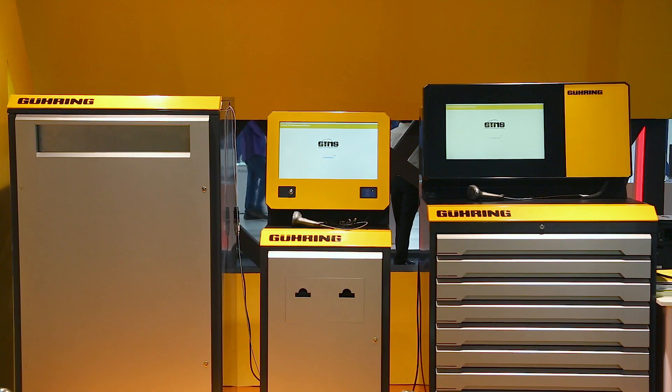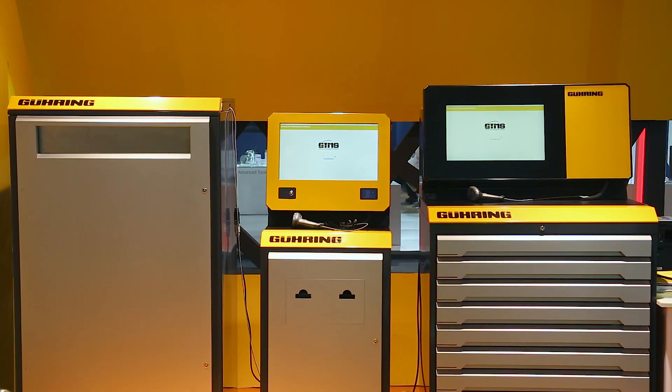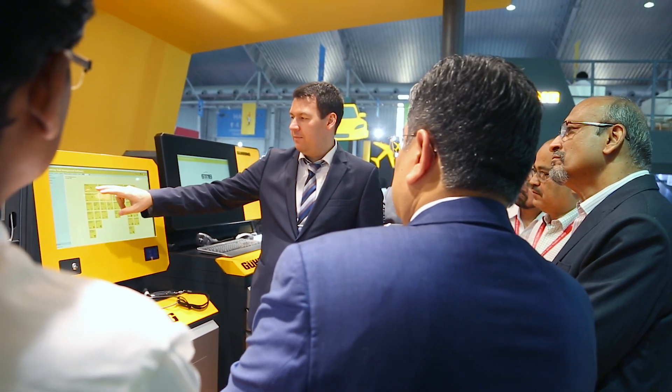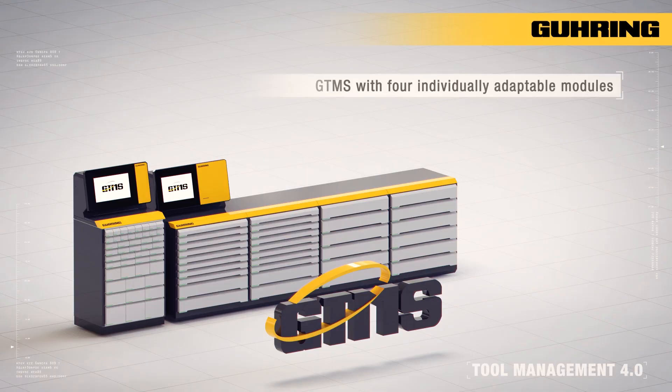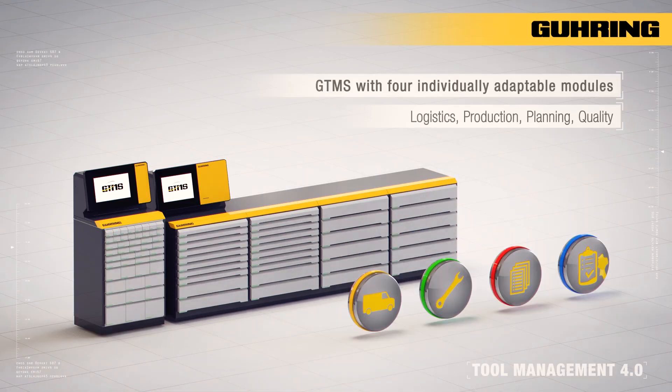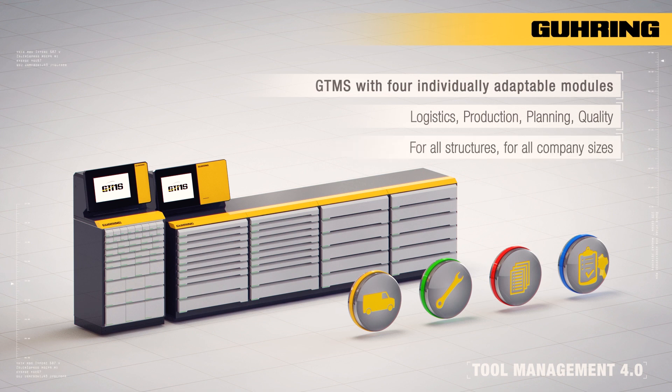With a new design and in-house programmed GTMS software, tool management is now 4.0 ready. GTMS uses the four modules logistics, production, planning and quality so it's individually adaptable to all structures and company sizes.